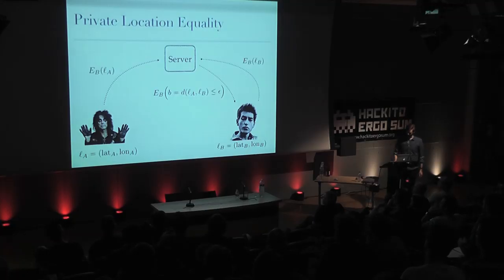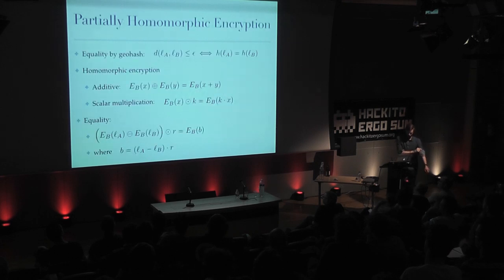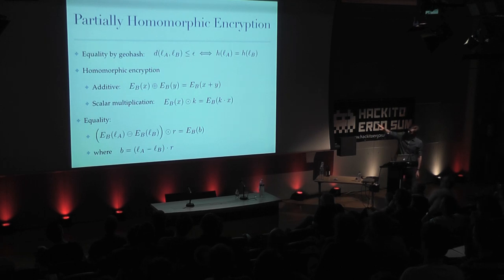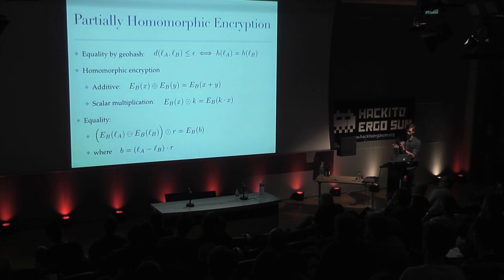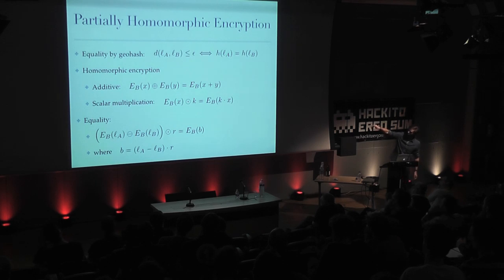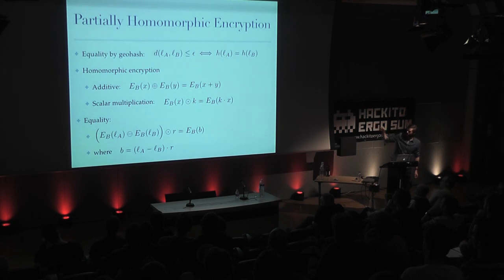So how can we implement this? What kind of scheme do we need? The typical one for this is called partial homomorphic encryption. Location equality is determined by a geohash — we say the distance is small if they hash to the same geolocation. We need a homomorphic encryption scheme with addition: we can take two ciphertexts and add them, giving another ciphertext whose plaintext is the sum of the two. We can also multiply with an unencrypted constant from the outside.